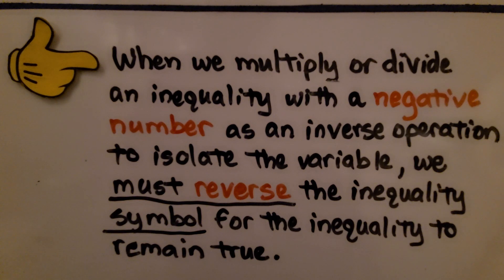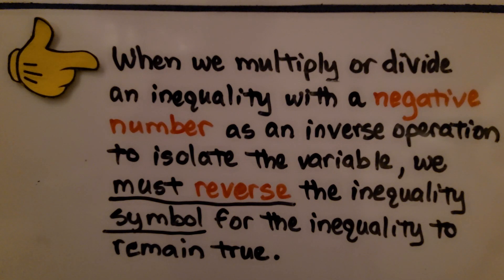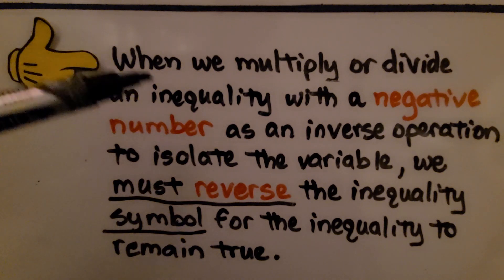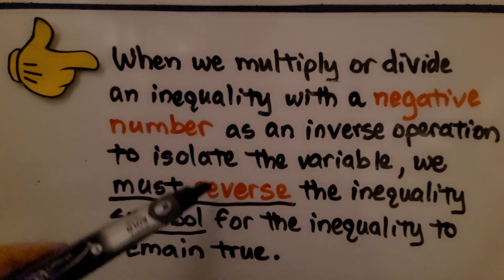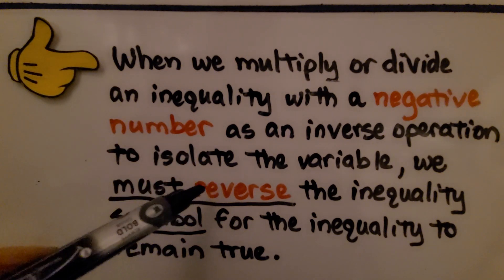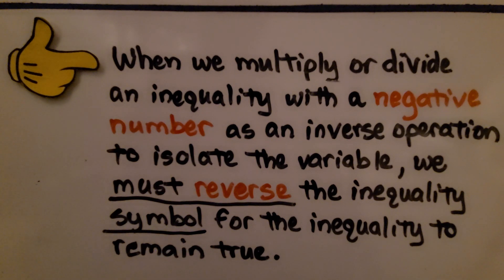It's very important to remember: when we multiply or divide an inequality by a negative number as an inverse operation to isolate the variable, we must reverse the inequality symbol for the inequality to remain true. So if we're multiplying or dividing by a negative number, reverse that symbol or it won't remain true.